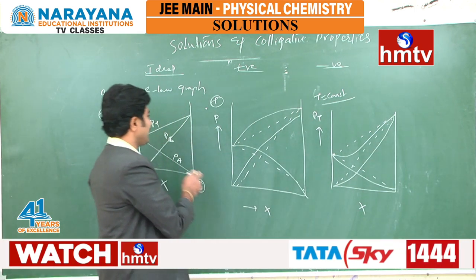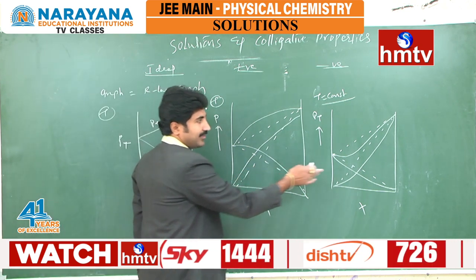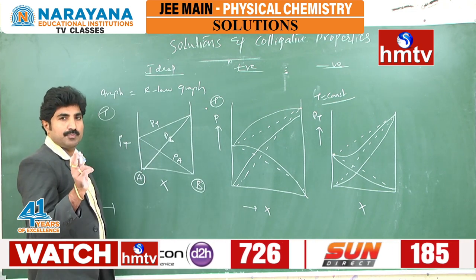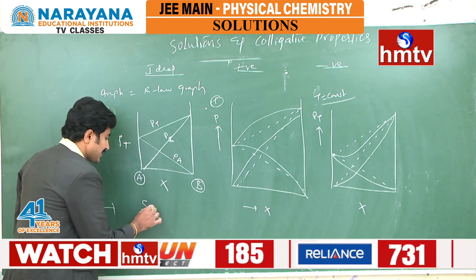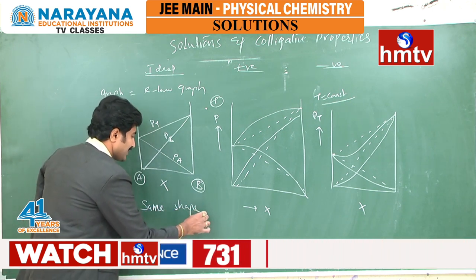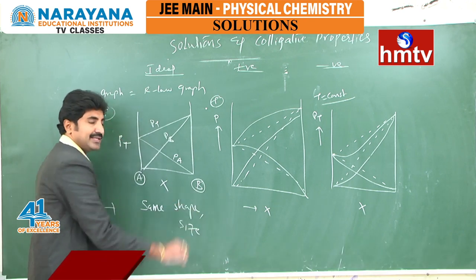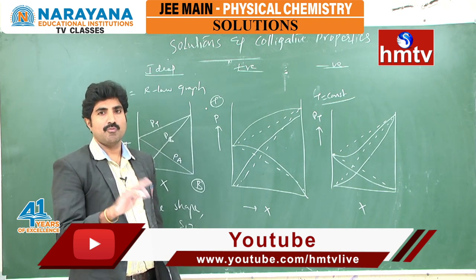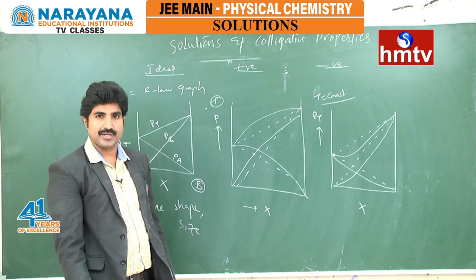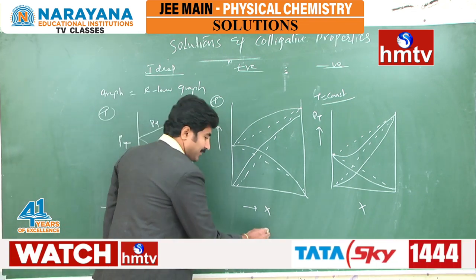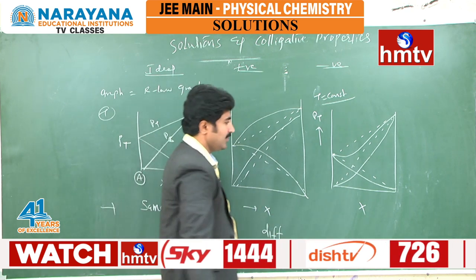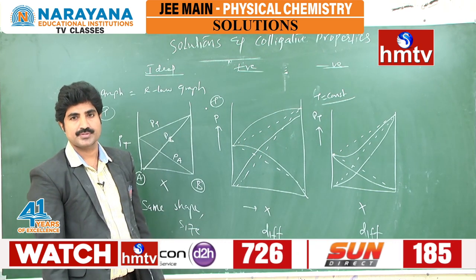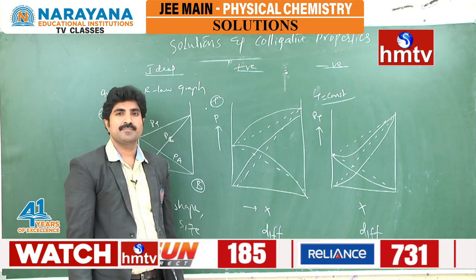So this is the graphical representation for ideal solution, this is for positive deviation, and this is for negative deviation. In an ideal solution, both A and B have nearly similar shape and sizes. In non-ideal solutions, shape and size are different, and that is why they are not forming ideal solutions. In every case, some examples are given.